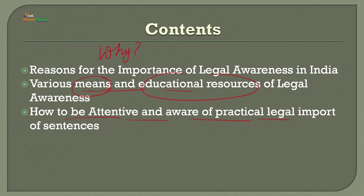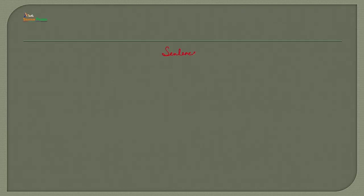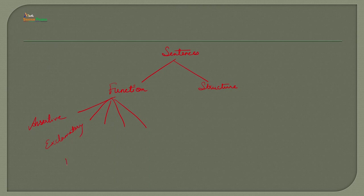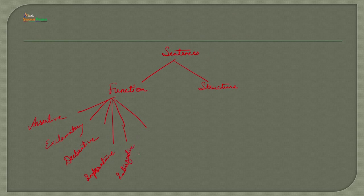When we talk about sentences, they are basically of two categories. The first category is divided on the basis of function, and the second one is divided on structure. When it comes to function, they are further divided into: assertive, exclamatory, declarative, imperative, interrogative, optative, and many others.